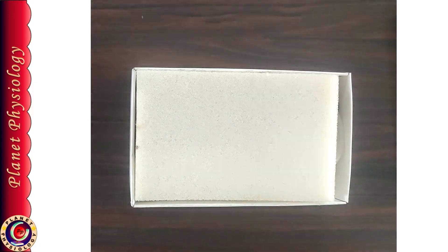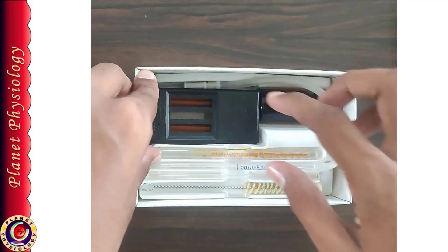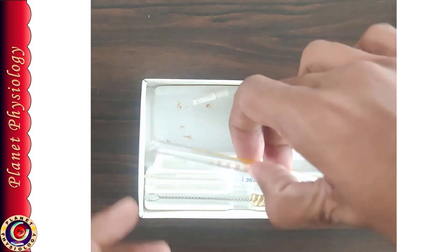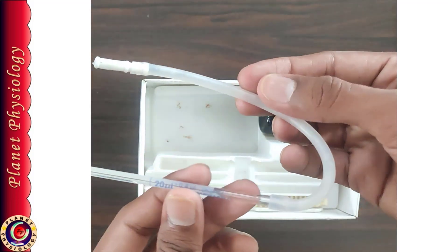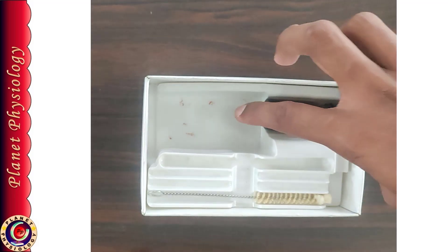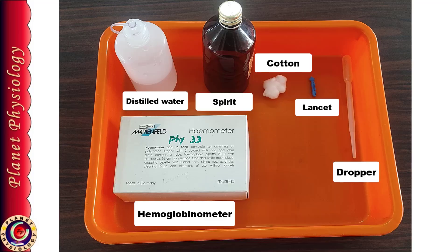For this, we require Sahli's hemoglobinometer. Usually it comes as a set containing the hemoglobinometer, hemoglobin tube, hemoglobin pipette, a stirrer, and a bottle containing N/10 HCl. We also require a dropper, distilled water, spirit, lancet, and cotton.